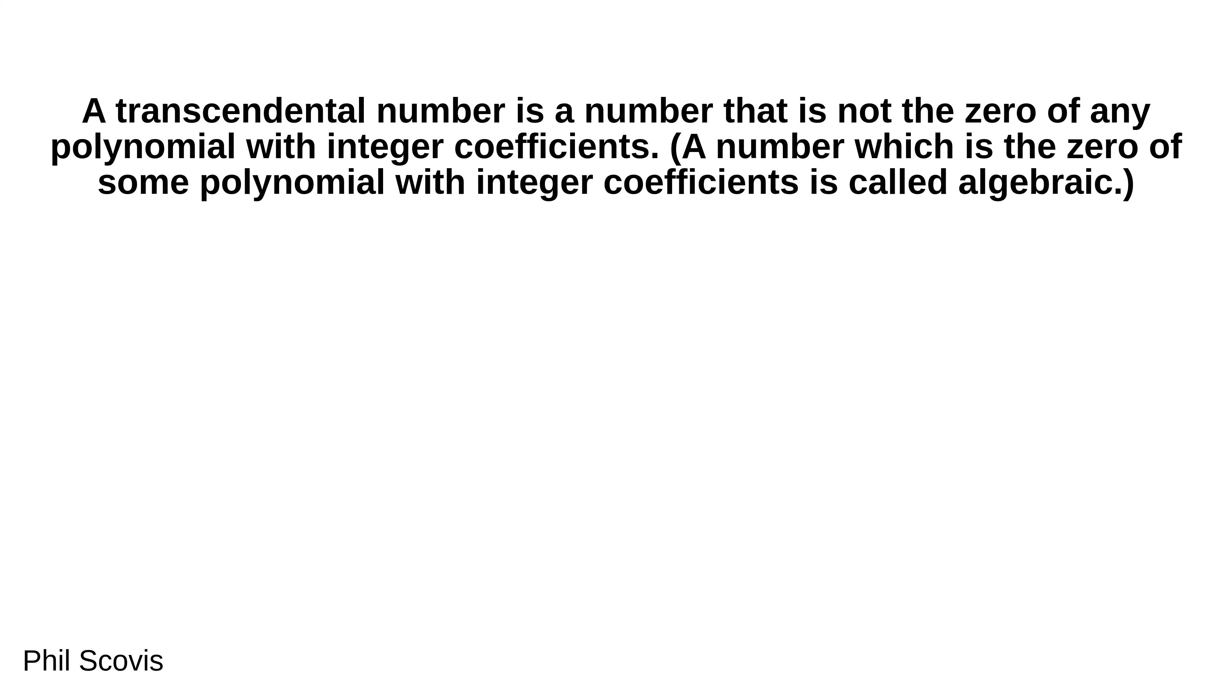A transcendental number is a number that is not the zero of any polynomial with integer coefficients. A number which is the zero of some polynomial with integer coefficients is called algebraic.